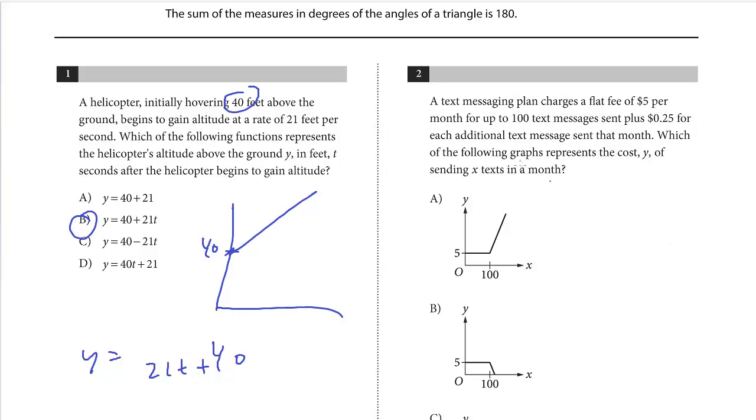And then question two. A text messaging plan - I like how they are using sort of relevant topics on these test questions now - charges a flat fee of $5 per month for up to 100 text messages sent plus $0.25 for each additional text message sent that month. Which of the following represents the cost y of sending x texts in a month?